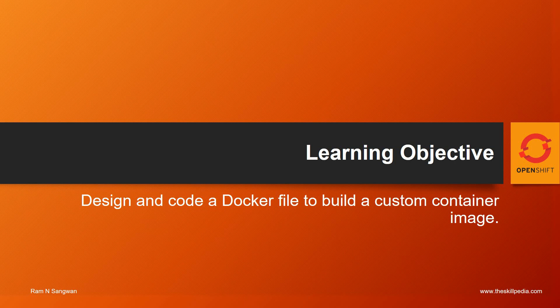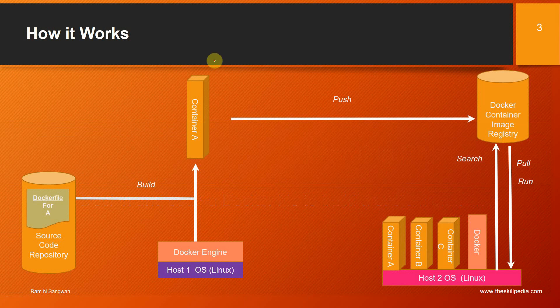This is the last session in the part about managing containers and containerized applications, because container and image management is a prerequisite for OpenShift. The learning objective is to design and code a Dockerfile to build a custom container image. How it works: we use a Dockerfile for an application where we have a source code repository, write our source code, and build it using the docker build command.